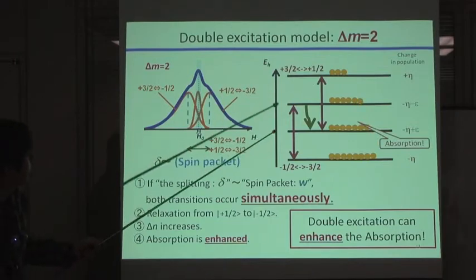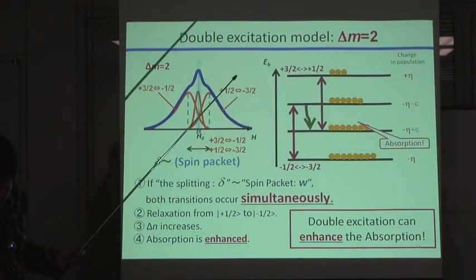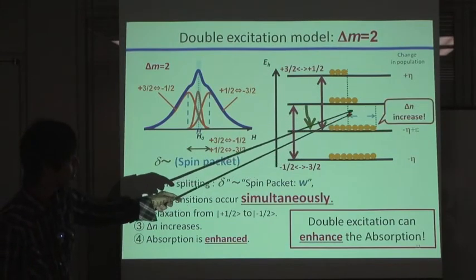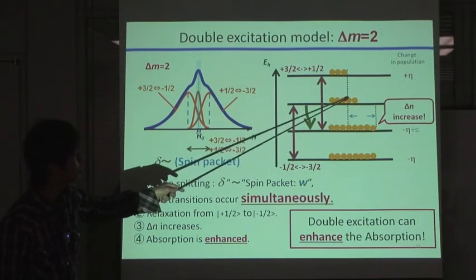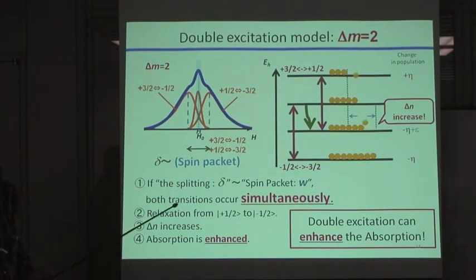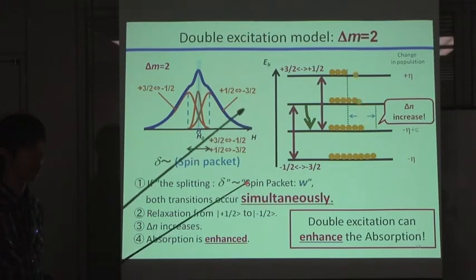And if you apply a magnetic field at the center point, first, this resonance is induced and relaxes to here, then the population difference between these two levels is increased. After that, the total absorption can be enhanced like this.